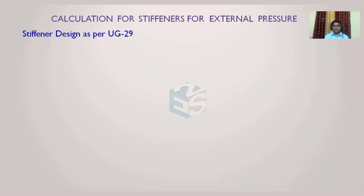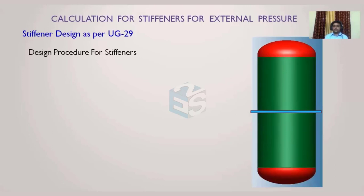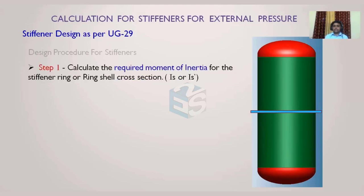To consider it as a line of support, it needs to satisfy the requirement of UC-29. The stiffener ring design is mentioned in UC-29, and in UC-29 the whole procedure is given for how to design the stiffener ring. This is the stiffener ring and this is one vessel for which we are supposed to design the stiffener. The design procedure has only three steps, so it's not very complicated.